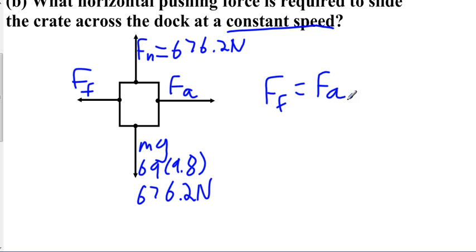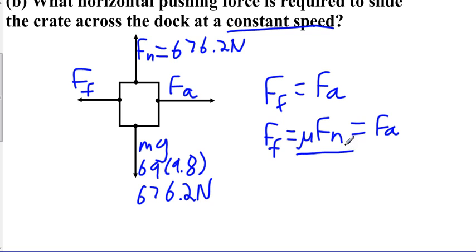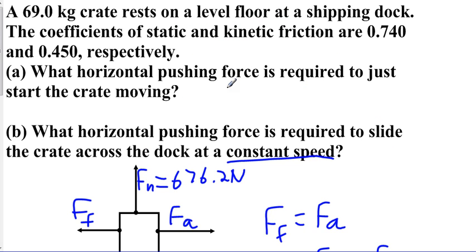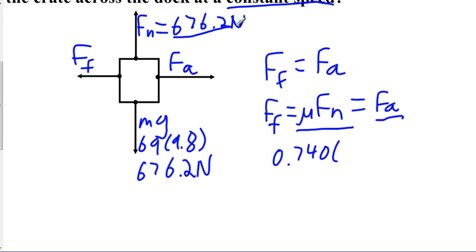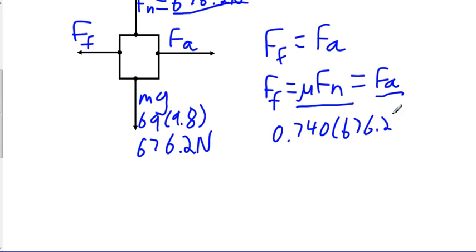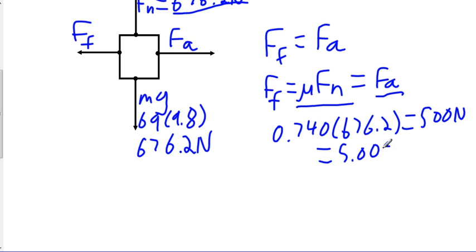The equation for friction force is Ff equals mu times Fn, which equals the applied force FA. Since the object is not moving yet, we use the coefficient of static friction, 0.740. So we calculate 0.740 times 676.2, which gives 500 newtons, or 5.00 times 10 to the second newtons. That's our answer for Part A.